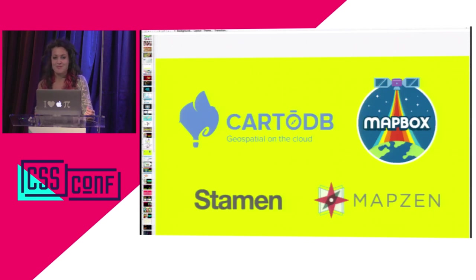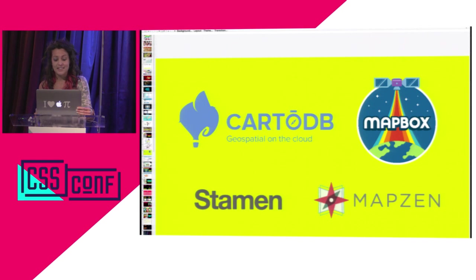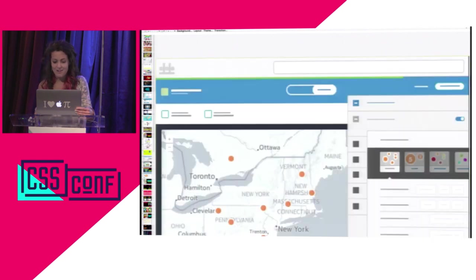These are some of the companies working on that. CartoDB is my company, but Mapbox is doing amazing things — they really support OpenStreetMap and donate a lot of developer time to that database of information. Stamen makes some beautiful base maps and does a lot of crazy CartoCSS. Mapbox actually developed CartoCSS out of CascadeNick. MapZen does a lot of experimental WebGL stuff with maps. There are a lot of people doing really dynamic, awesome things with maps, mostly in the browser.